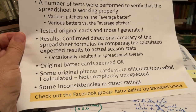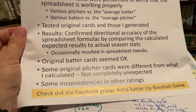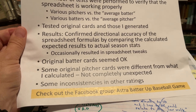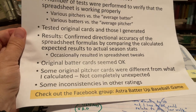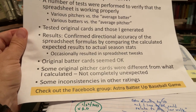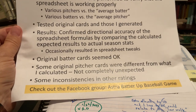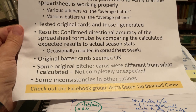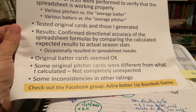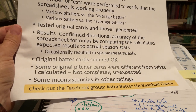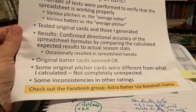Occasionally in this testing I ended up going back and tweaking the spreadsheet. The original batter cards were pretty accurate, maybe not so much the pitcher cards, which was not unexpected. In the other ratings there were some inconsistencies — the home run ratings, for example, didn't always seem to make complete sense.